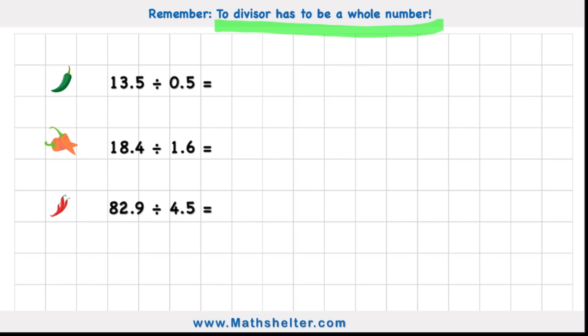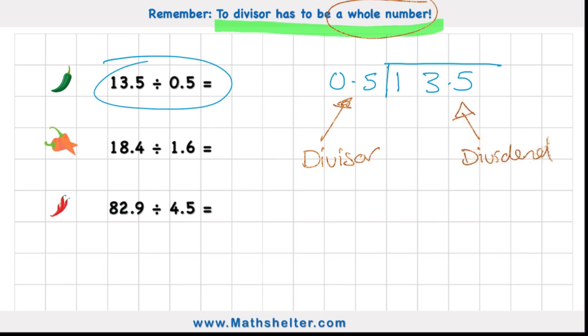So first of all, let's just understand what our divisor is with our first example here. I have 13.5 divided by 0.5. So we need to know what these parts of the question are. The number on the outside is the divisor. This is what needs to be a whole number. And the number on the inside is the dividend. It doesn't matter if the dividend is a decimal. So knowing that, let's look into question one.